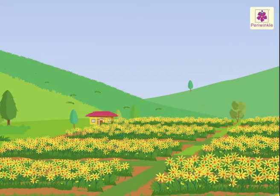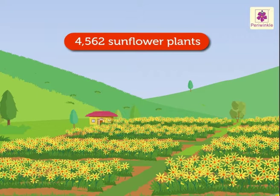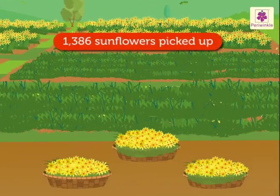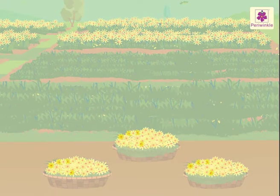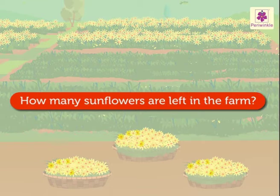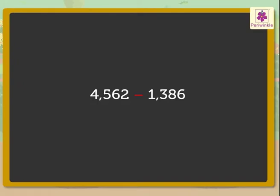Look, there are 4,562 sunflower plants on the farm. Sammy picked up 1,386 sunflowers. Let us find out how many sunflowers are left in the farm. Here, we have to subtract 4,562 and 1,386 to find the answer.